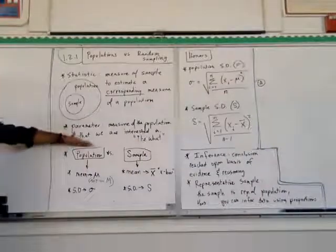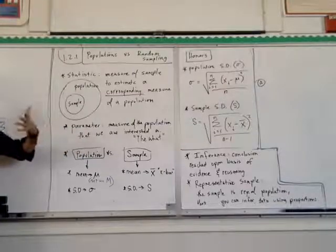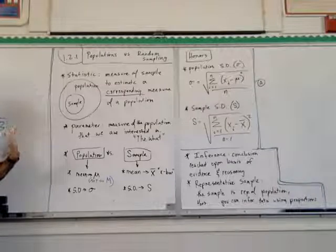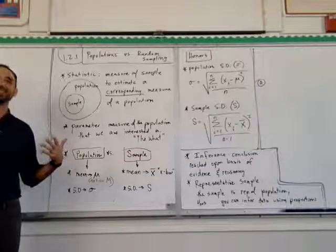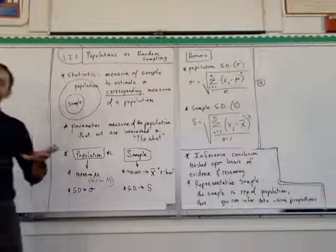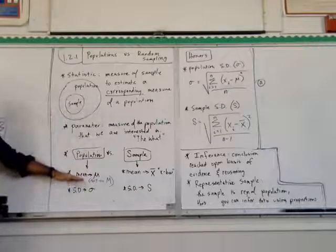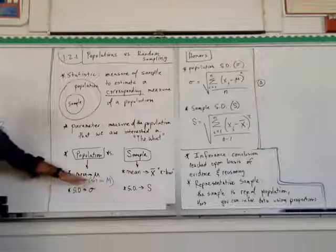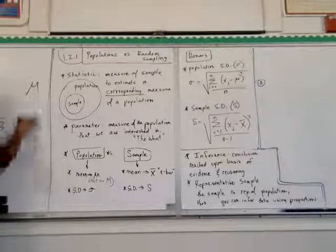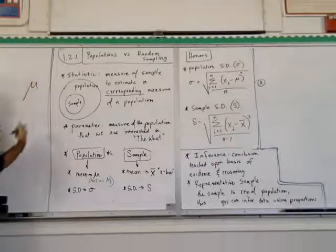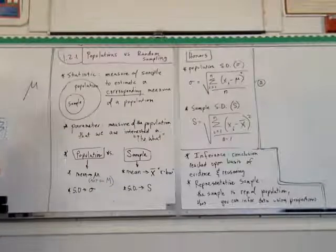When we have a population versus a sample, we're talking about the mean for each of them and we have to have different symbols. For population we're talking about mu — I want to clarify it's not an M. We're going to put more of a tail on the left because this is the Greek symbol mu. If you're making more of an M, drop that tail on the left and make it more of mu.